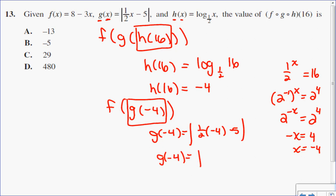So half of negative 4 is negative 2, take away 5. So negative 2 take away 5 is negative 7. The absolute value of negative 7 is positive 7. So my final answer that I have to worry about now,